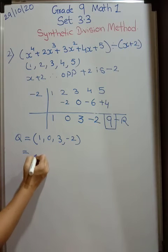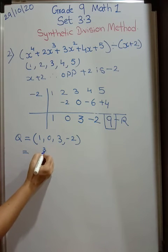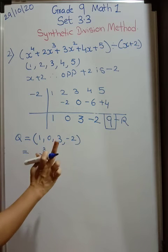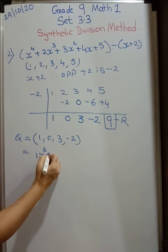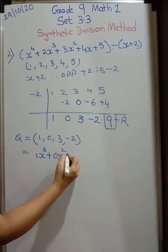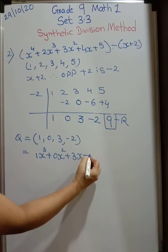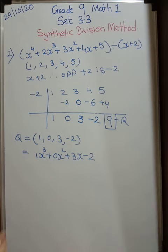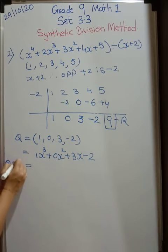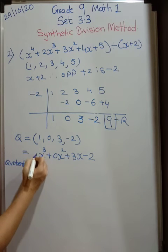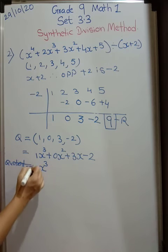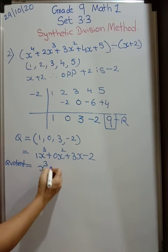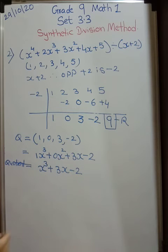So 1 x raised to 3. This 3 has come from 1, 2, 3, 4 minus 1. That is 3. Plus 0 x square plus 3x minus 2. See if you take 3 to 1, I mean last term automatically remains constant. So 0 x square no need to write. So we can write quotient because they have asked us. Quotient is equal to x cube is only x cube. 1 we don't write normally. Plus 3x minus 2.